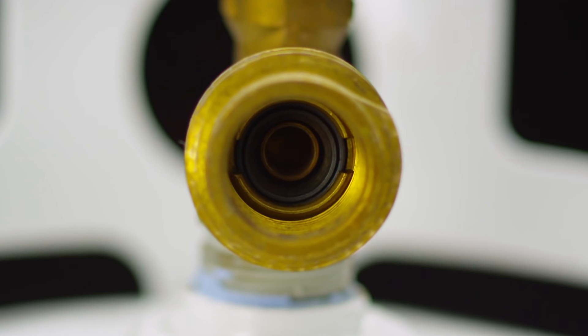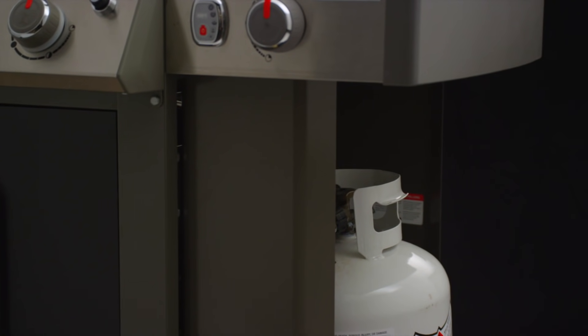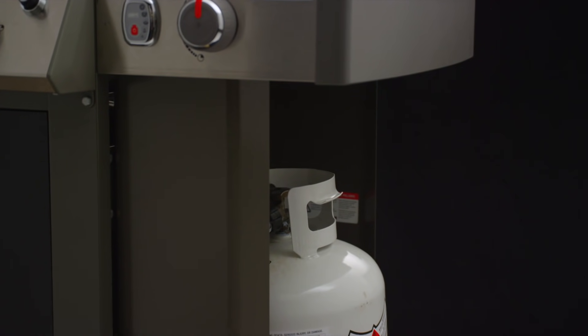Sometimes a tank valve gasket loses its original shape as shown in the picture. You also want to look for cracks or splits. A tank gasket that is out of round or has cracks may leak LP gas.